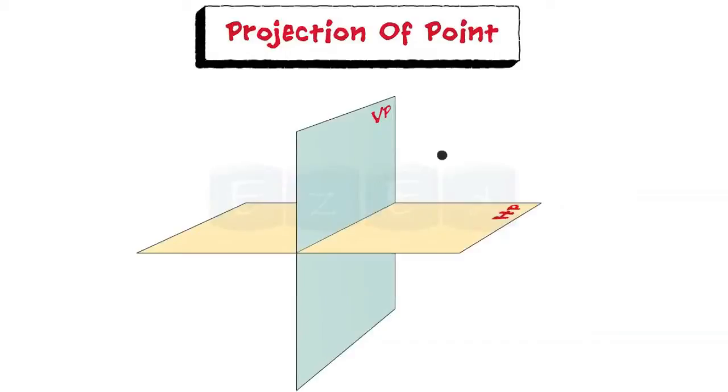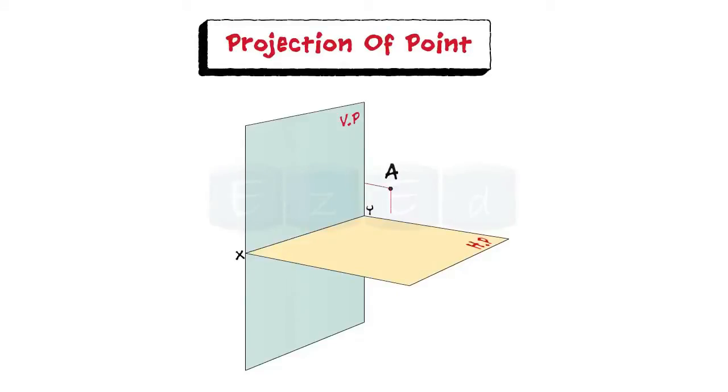Let us understand the term projection of a point. A point may be situated in space in any of the four quadrants. Consider point A is situated in first quadrant. The position is obtained by extending their projectors onto the planes.